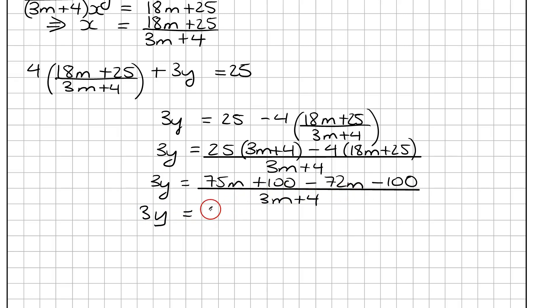And just tidying the top a small bit, 75m minus 72m is 3m, and then 100 minus 100 is gone. And then I have 3m plus 4 on the bottom.